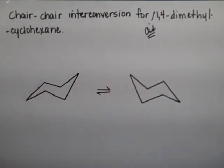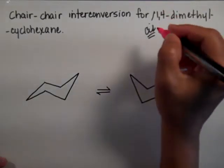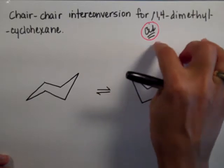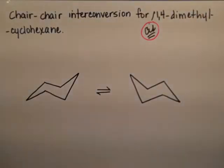So I'm going to do the whole process and the first thing that I want you to notice is that we want the cis-1,4-dimethyl cyclohexane.